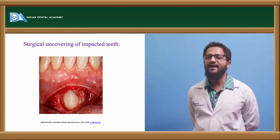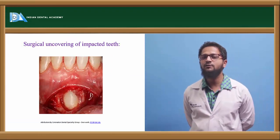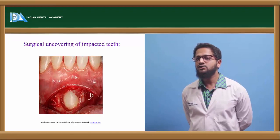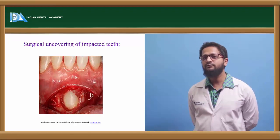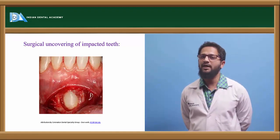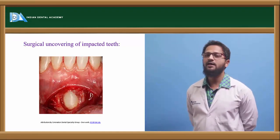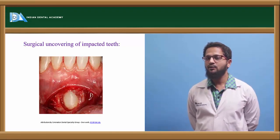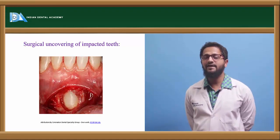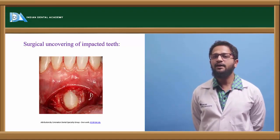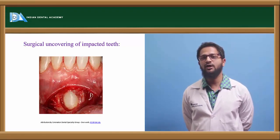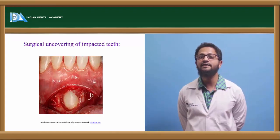Next is surgical uncovering of impacted teeth. Impacted teeth are commonly seen in orthodontic patients; many patients have impacted canines. If the canine is in a favorable position within the bone, it can be brought into the arch. If it is in an unfavorable position, it has to be extracted. Surgical uncovering consists of: first, proper evaluation of tooth position, which can be done by taking radiographs using the SLOB technique — two radiographs taken at right angles to indicate the exact position of the tooth.